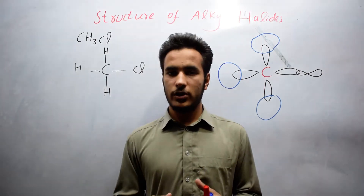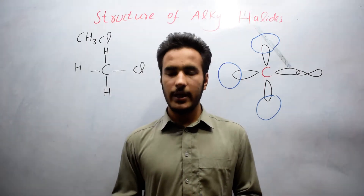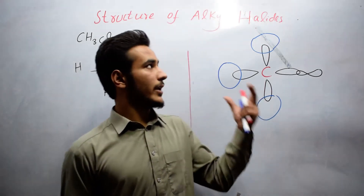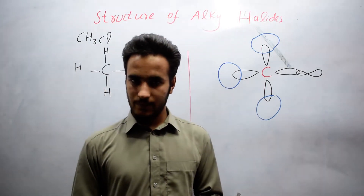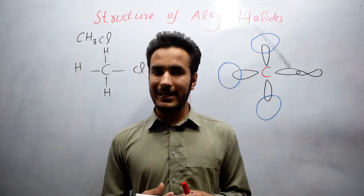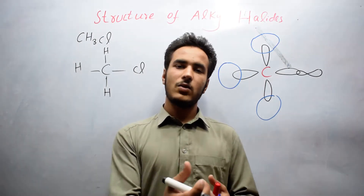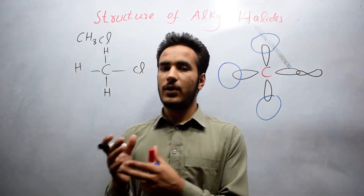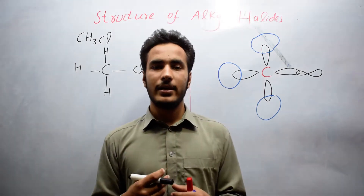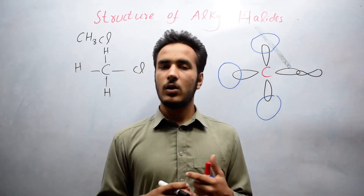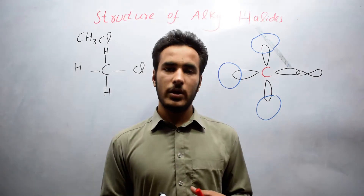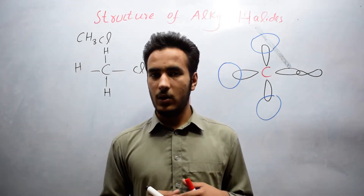When we replace one hydrogen by a halogen in an organic compound, the new compound is known as an alkyl halide. Alkyl halides are basically derivatives of alkanes. If we replace one hydrogen in an alkane with a halogen — which is chlorine, fluorine, bromine, or iodine — the new compound is known as an alkyl halide or haloalkane.